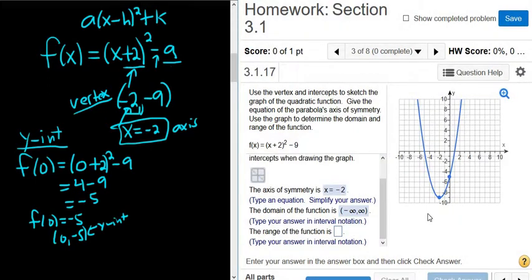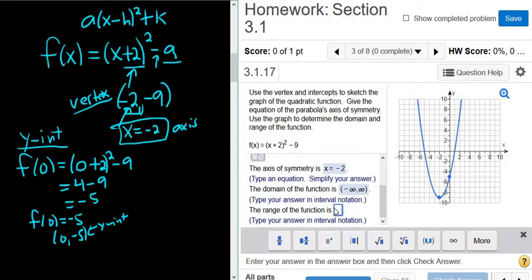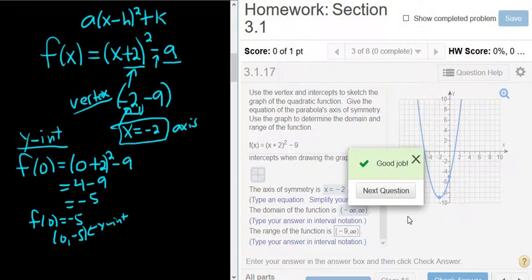The range. The range is all the possible y values and we're going from the bottom up. It looks like it's negative 9 to infinity and we include the negative 9 so we use a bracket. You can also look at your vertex. The smallest y value here is negative 9 because the parabola opens up, so negative 9 to infinity, always from the bottom up for range. So, bracket, negative 9, comma, infinity, and parentheses, then you hit check answer, and that's it. We finished. I hope that made sense.